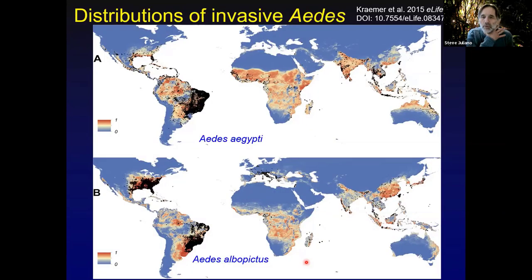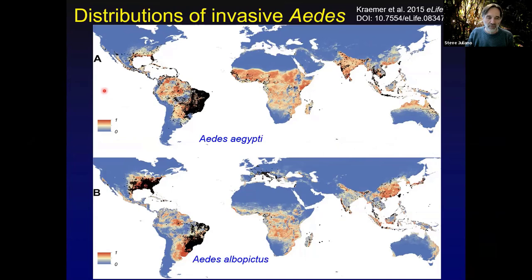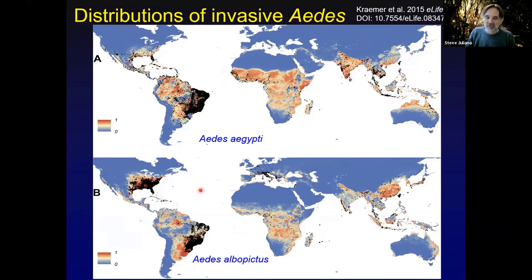This is a pair of maps from a nice paper by Kramer that investigated the expected geographic distribution of these two species based on climate and land use. The colors — red, white, and blue — show likelihood of occurrence, with red being most likely. Broadly speaking, their expected suitable ranges, which approximate the fundamental niche, broadly overlap across the globe. Aedes aegypti tends to extend into more arid areas, while Aedes albopictus is predicted to be more abundant in temperate zones like northern North America.